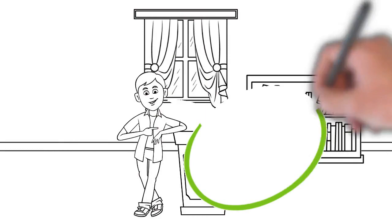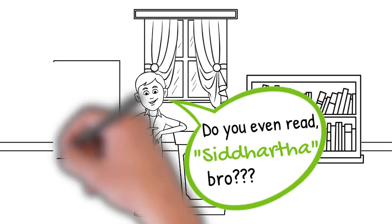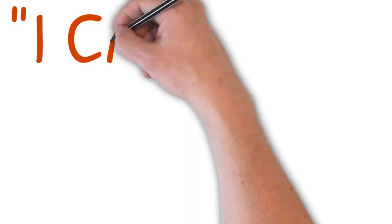A great starting point is to start with three tools that allow for the rest. Three tools that can be stated in one phrase from the book Siddhartha. I can think, I can wait, I can fast.